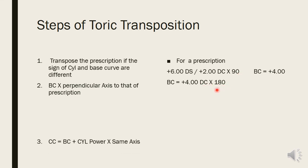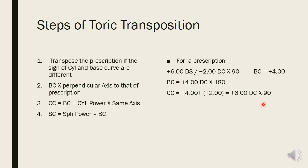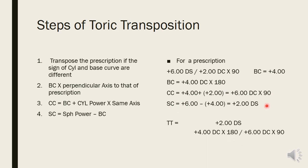Step three: the cross curve (cylinder curve) = base curve plus cylinder power, at the same axis as the prescription. So plus four plus two = plus six at 90 degrees. The sphere curve = spherical power minus base curve = plus six minus (plus four) = plus two diopters. So we have: sphere curve = plus two, base curve = plus four at 180, and cross curve = plus six at 90.